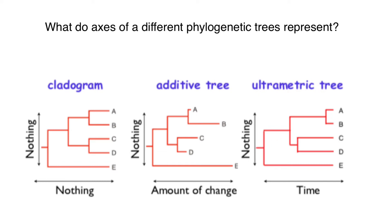So the ultrametric tree is more informative than just a cladogram. For example, if we place speciation E here, that means that speciation went extinct, because in an ultrametric tree, this rightmost point represents the present.